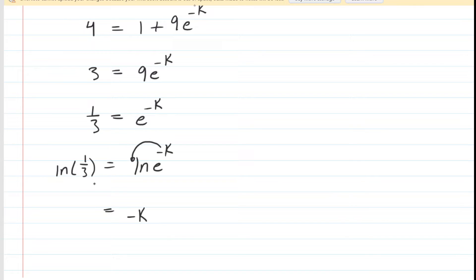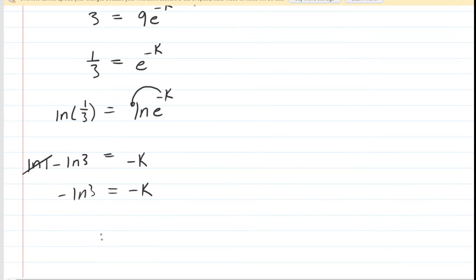On the other side, we're going to apply a log property to expand that. We know that the logarithm of 1 third would be the logarithm of 1 minus the logarithm of 3. The logarithm of 1 is 0, so now we have negative ln of 3 is equal to negative K. We divide both sides of that equation by negative 1, and we can see that K is equal to the natural log of 3.